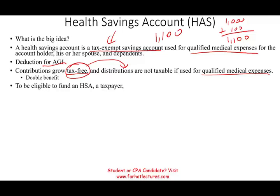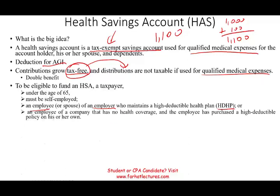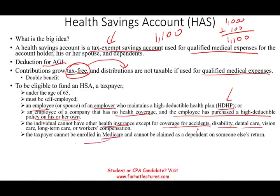Who's eligible to have an HSA? You have to be under 65 — simply put, if you qualify for Medicare, you don't qualify for it. You must be self-employed, an employee or spouse of an employer who maintains a high deductible plan, or an employee of a company with no health coverage who has purchased a high deductible policy on their own. The individual cannot have other health insurance except for coverage for accidents, disability, dental care, vision, long-term care, and workers' compensation. You cannot be enrolled in Medicare and cannot be claimed as a dependent on someone else's return.